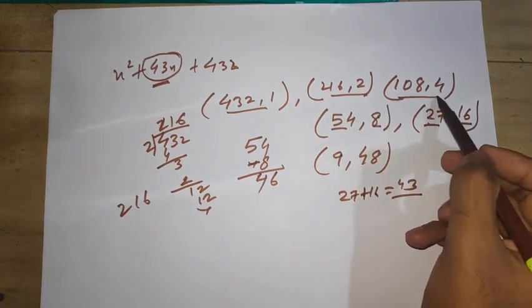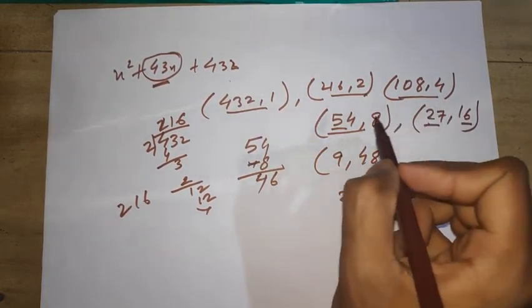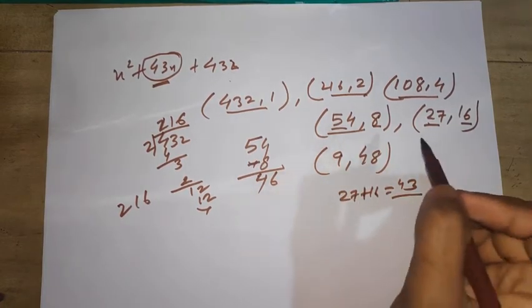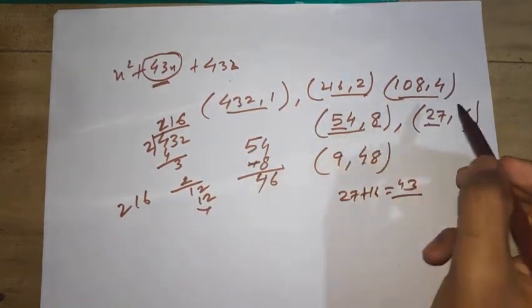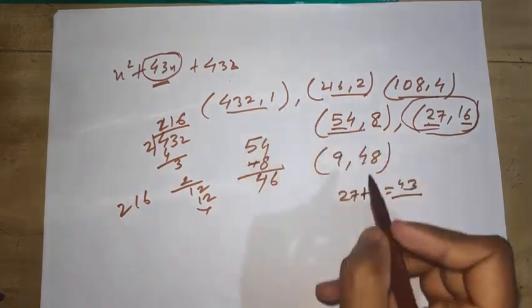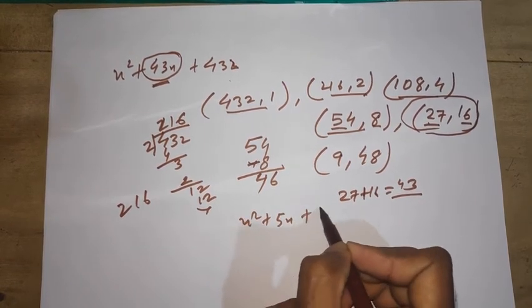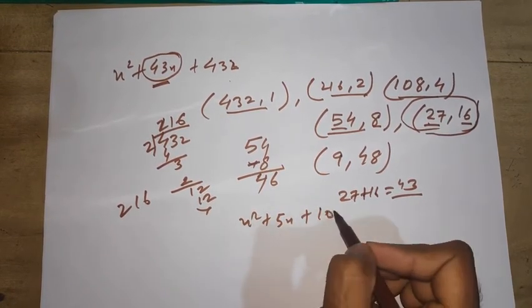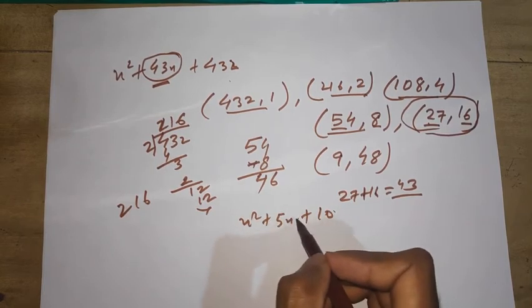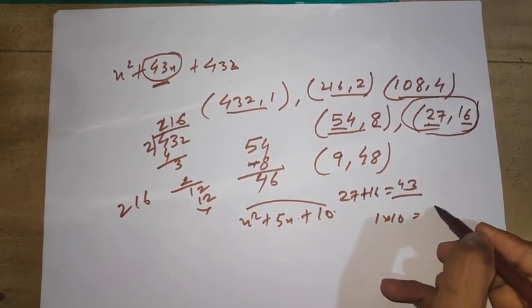Can we see 27 and 16? Let's try it - 27 plus 16 equals 43. You see, you got your answer! This is the trick you can apply to each and every big number.